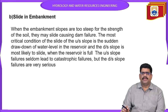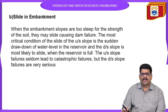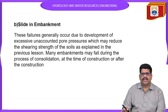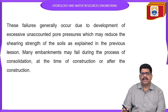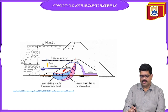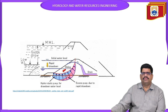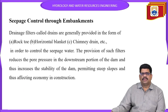Slide in embankment: the embankment side slopes are subject to sliding of soil. This is also one of the major causes of failure of the embankment. On the upstream side, rapid draw-down can cause sliding, and on the downstream side, sliding due to total draw-down is also one of the failure modes.